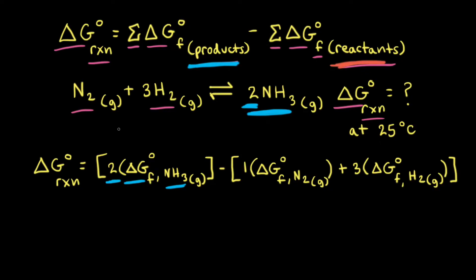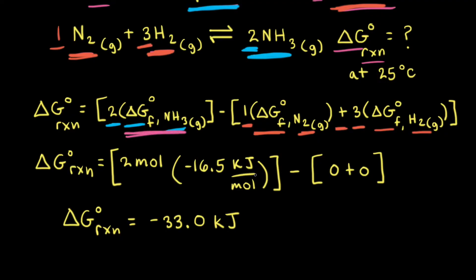Next, we think about our reactants — nitrogen and hydrogen — and we need the sum of their standard changes in free energy of formation. We write the standard change in free energy of formation of nitrogen; since there's a 1 in the balanced equation, we multiply by 1. We add the standard change in free energy of formation of hydrogen gas, and since we have a 3 in the balanced equation, we multiply by 3. For ammonia, the standard change in free energy of formation is negative 16.5 kilojoules per mole, multiplied by 2 moles. For nitrogen and hydrogen, both are elements in their standard states, so their values are zero. Therefore, the standard change in free energy for this reaction equals negative 33.0 kilojoules at 25 degrees Celsius.